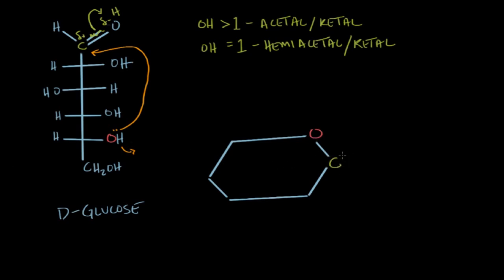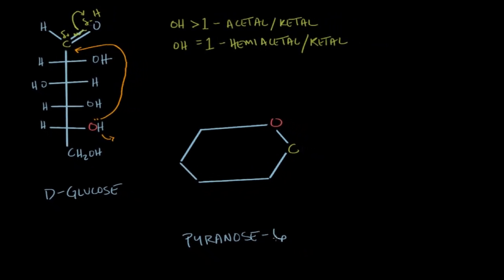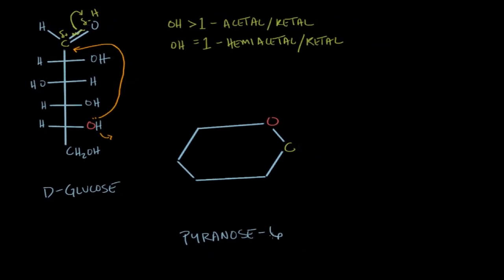Now when we end up with a six-membered carbohydrate ring, such as the case with glucose here, we call the product a pyranose. Pyranose, the "-ose" again has the suffix for sugar. And then in the "-pyr" part, to indicate that this ring is sugar with six carbons. And then if the carbohydrate ring is a five-carbon ring, we call it a furanose.